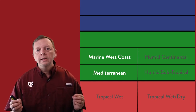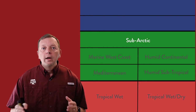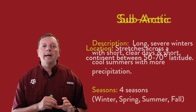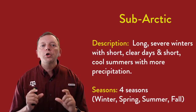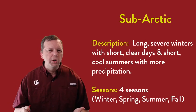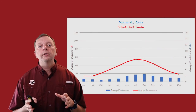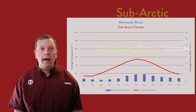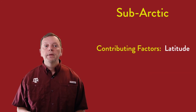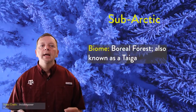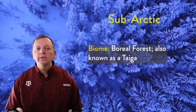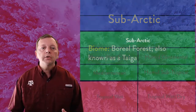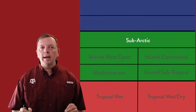Our last temperate climate is the sub-Arctic climate, which stretches across the entire continent between 50 and 70 degrees latitude. It is defined by long, bitterly cold winters with short, clear days and little precipitation, usually in the form of snow. It receives more precipitation in the summers, but remains rather cool, averaging only about 60 degrees Fahrenheit. The dominant climate factor here is latitude. The biome we find in the sub-Arctic is the boreal forest, consisting of trees specially adapted to deal with the cold temperatures.